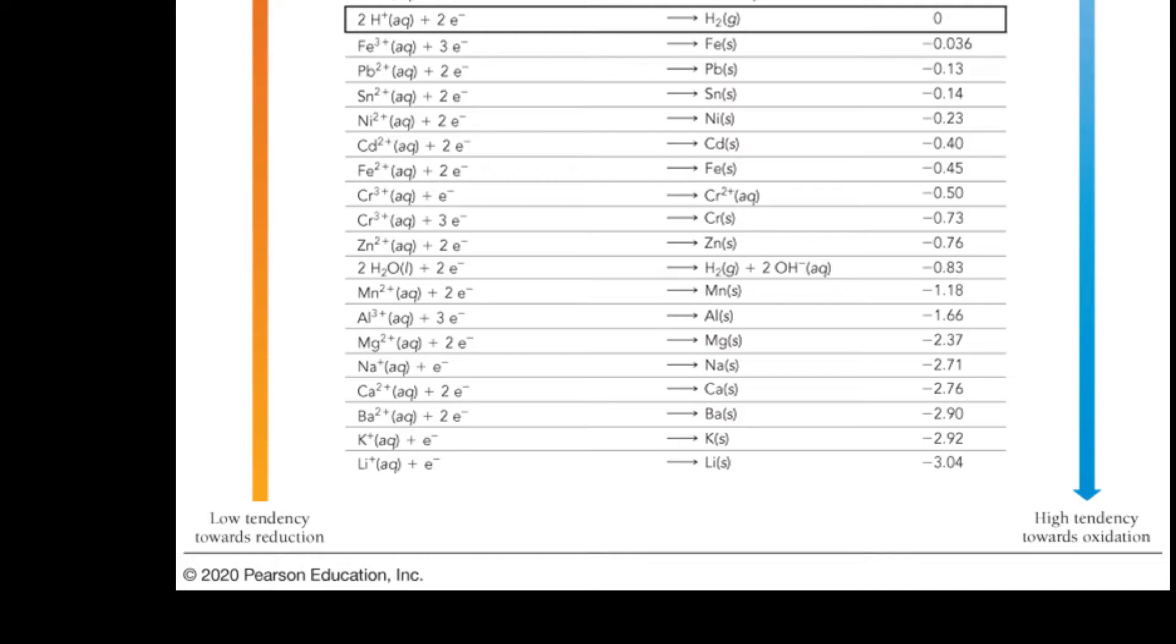So we can interpret this a couple of different ways. We can say lithium is easily oxidized because it's really good at giving up electrons. We can also say that if you are giving up electrons to something else, you're making that something else be reduced. So we can say that these down here are really good reducing agents.